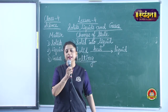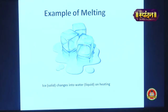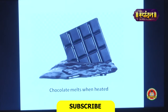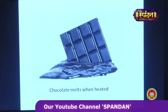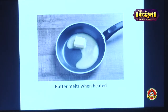Let us see some examples of this change of state from solid to liquid. Ice, which is a solid, can change into water, which is a liquid, on heating — this is called melting. Chocolate melts when heated. Butter also melts when heated. These are examples of melting.